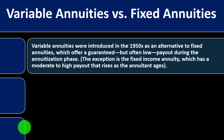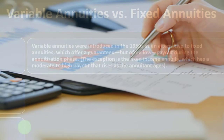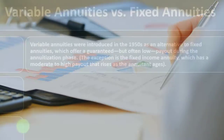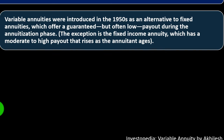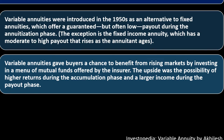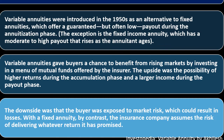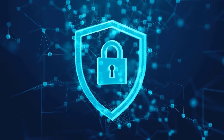The fixed annuity is the one you probably want to keep as your baseline when comparing to more exotic types. Variable annuities were introduced in the 1950s as an alternative to fixed annuities, which offer a guaranteed but often low payout during the annuitization phase. Variable annuities give buyers a chance to benefit from rising markets by investing in a menu of mutual funds offered by the insurer, with the upside of higher returns during accumulation and larger income during payout — but the buyer is exposed to market risk, which could result in losses.